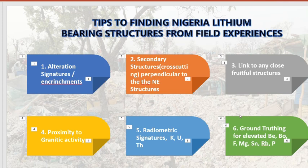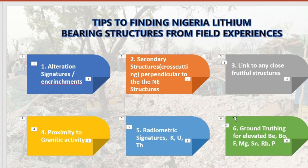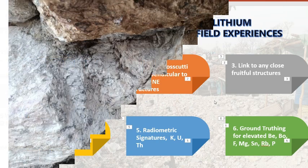First, you need to identify some of the elevated indicator elements — for lithium pegmatites these include beryllium, boron, fluorine, magnesium, tin, rubidium, and phosphorus. When you finally get to the ground through soil sampling and test for these elements, most of the time the lithium you're looking for is not at the surface. So when you test for these elements and they are elevated at the surface, you need to start digging at those locations to get deeper samples to find what you're actually looking for. These tips work remotely as a fast way to pinpoint locations.